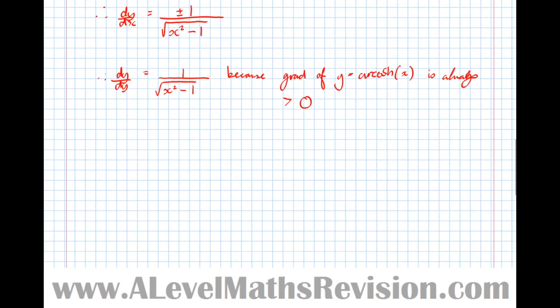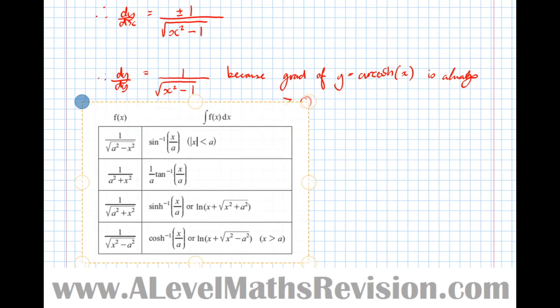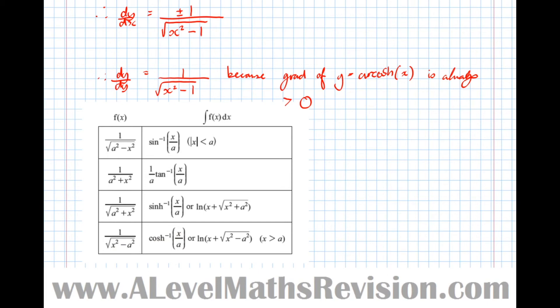These results are given in the formula booklet — I've taken this from the OCR formula booklet, though the Edexcel one is pretty similar. They appear in the integration section rather than the differentiation section. The differential of arcsinh(x/a) and arcosh(x/a) are given there in a slightly different form.